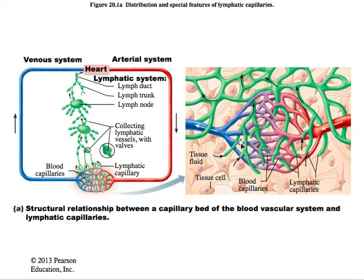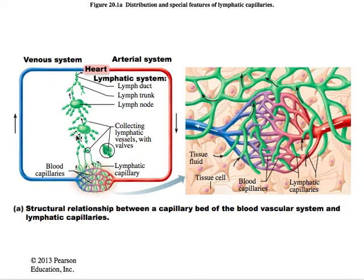Let's take a closer look. These are lymphatic capillaries here — they weave between the tissue cells and the blood capillaries. Just so you know, these are not present in the central nervous system because the brain and the spinal cord are drained by cerebrospinal fluid rather than blood or a lymphatic system of any kind. One of the things you'll notice about these is that they have a blind end, so they're not circulatory. It's a one-way system — only one way, from the capillaries back up into the blood.